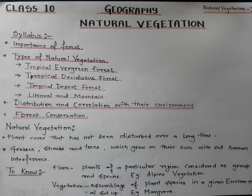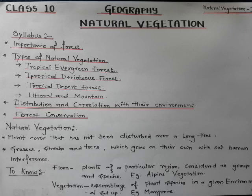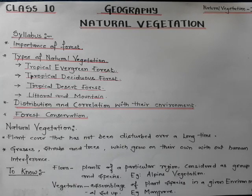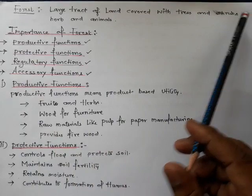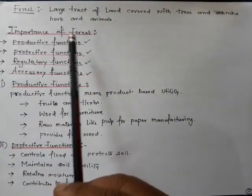Vegetation means the assemblage of plant species in a given environmental setup. For example, mangrove forests are also known as tidal forests or swamp forests, usually found along deltaic regions of any river mouth. In India, along the mouths of the River Ganga and Brahmaputra, there is a typical tidal forest known as the Sundarbans — a large tract of land covered with trees, shrubs, herbs, and animals.